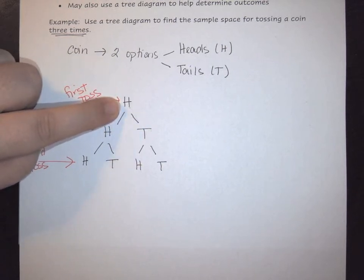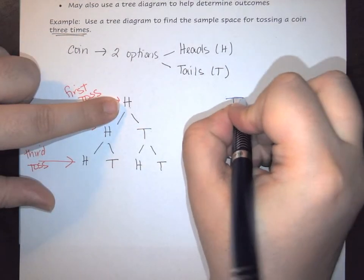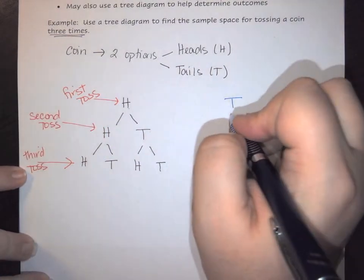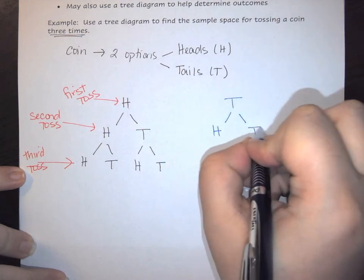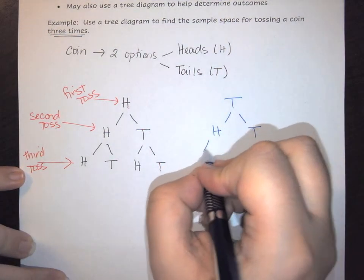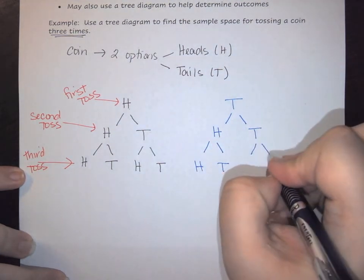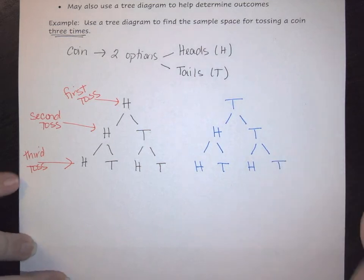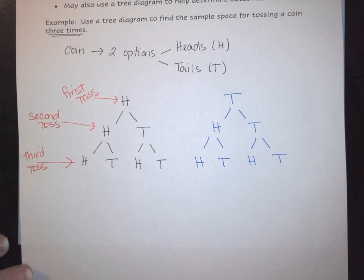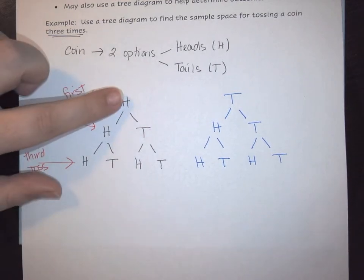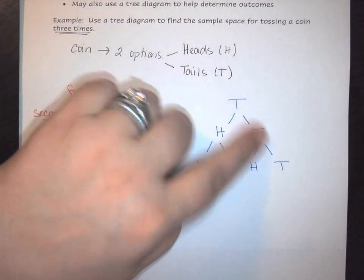This tree diagram is specific to when the first toss is heads. However, the first toss could also be tails. If my first toss was tails, my second toss again has two options — heads or tails — and my third toss likewise has two options for each branch. That completes both halves of the full tree diagram for three coin tosses.